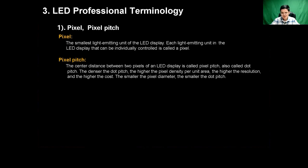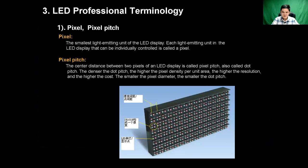And pixel pitch: the center distance between two pixels of an LED display is called pixel pitch, also called dot pitch. The denser the dot pitch, the higher the pixel density per unit area, the higher the resolution, and the higher the cost. So the smaller the pixel diameter, the smaller the pixel pitch. You can see the photo showing pixel pitch and pixel composition.